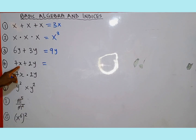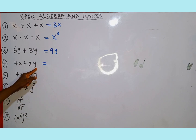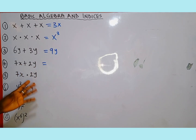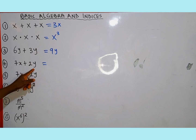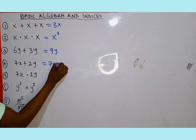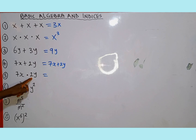Number four, we are given 7x plus 2y. We notice that 7 and 2 are constants, but x and y are variables. In this case x and y are not the same — they are different variables — so we cannot add these two terms together. The result remains 7x plus 2y; nothing changes.